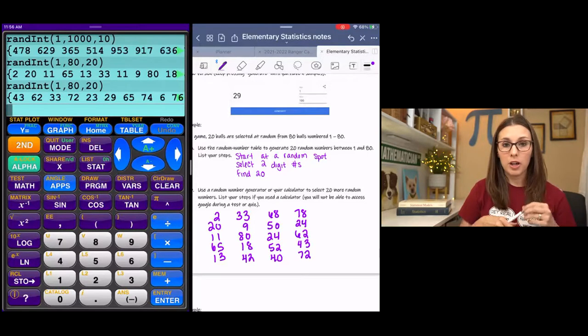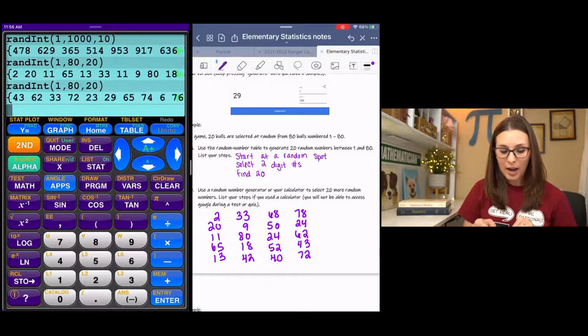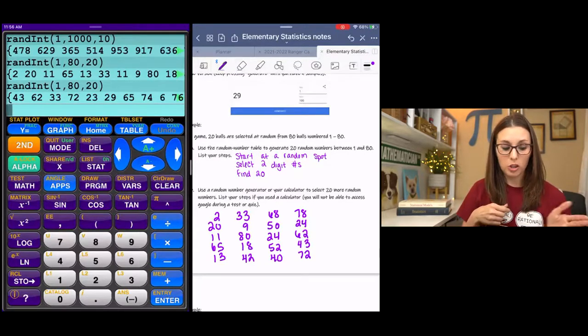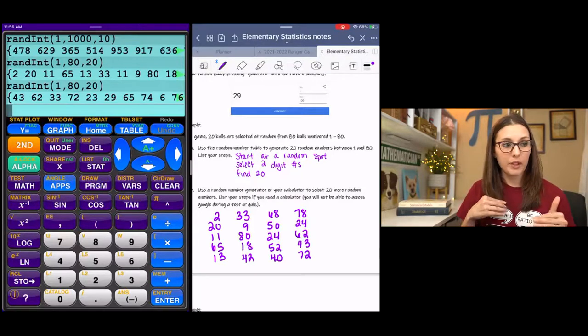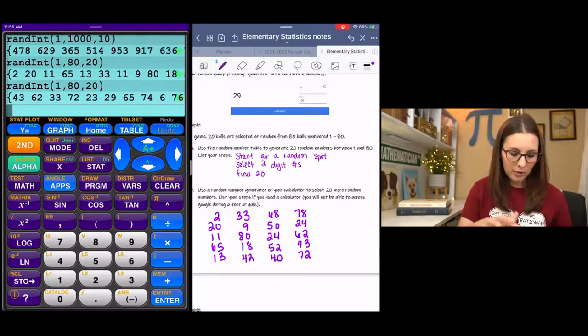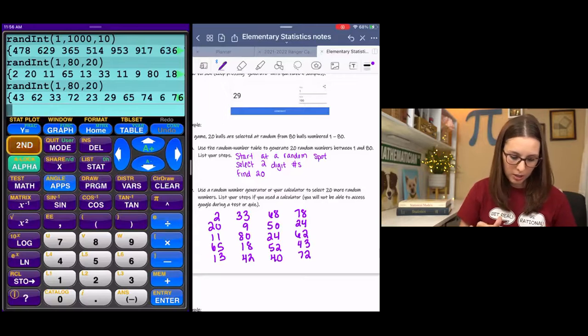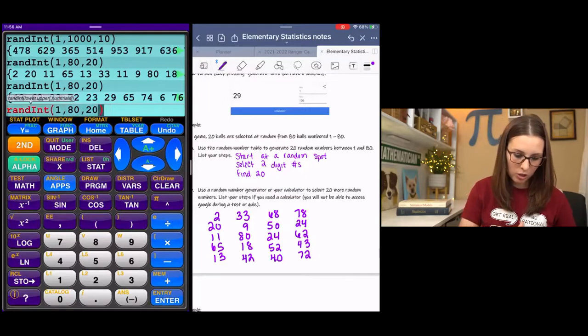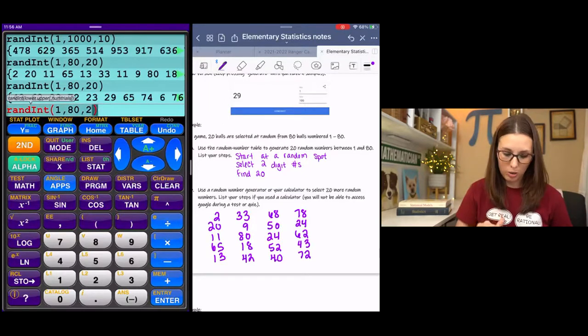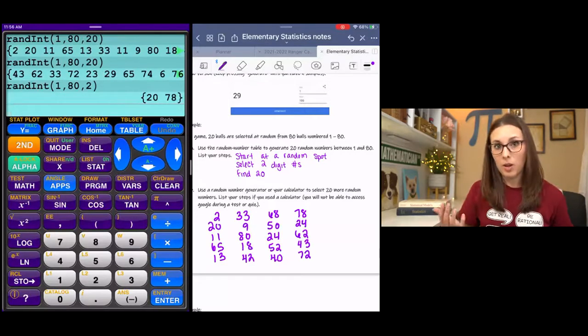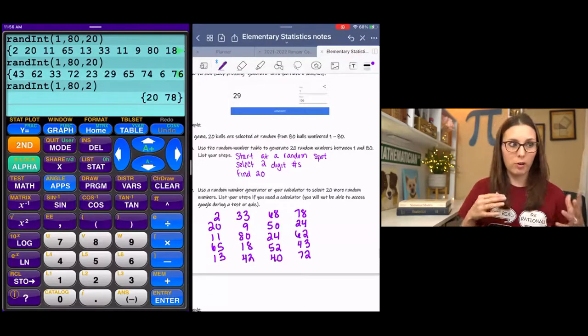And if you're using your calculator or the internet, you should be able to get 20 numbers pretty quickly. In mine, I ended up with repeating numbers. So I had to do it again to get my remaining numbers. I might even could have done, let me see, second entry. I could have changed this to two because I was missing two numbers. And that would have given me just two instead of a whole extra 20.